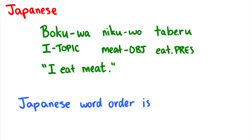One example is Japanese. The Japanese sentence 'boku wa niku o taberu' breaks down as: boku = I, wa = topic marker, niku = meat, o = object marker, taberu = eat (present tense). The readable English translation of this sentence is 'I eat meat.'